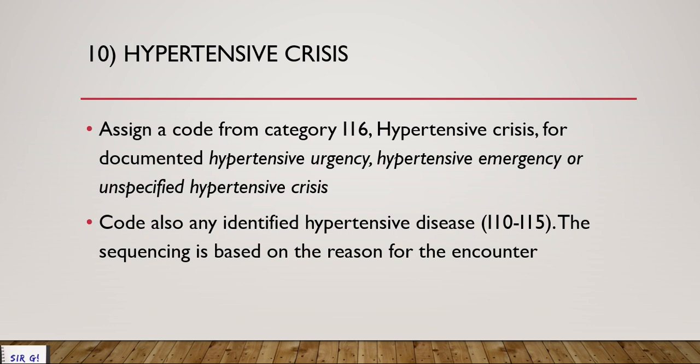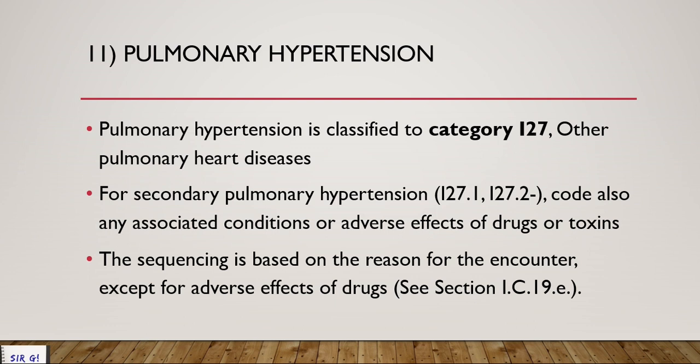That ends the hypertension guideline. Before proceeding to guideline B, let me note that pulmonary hypertension, category I-27, was new for 2019 and 2020. Pulmonary hypertension is an increase of blood pressure within the lungs only, and a patient may encounter it due to drugs, toxic effects, or adverse effects of medications.